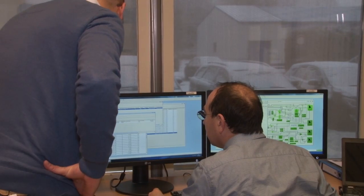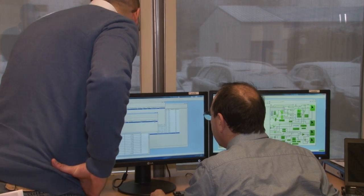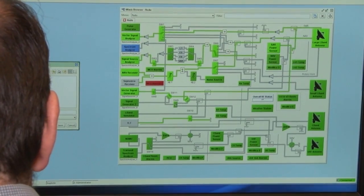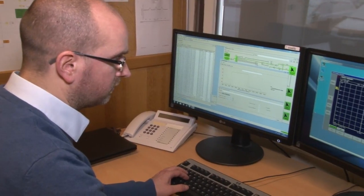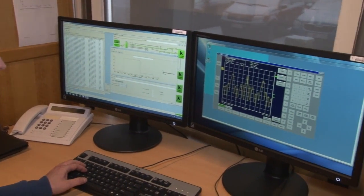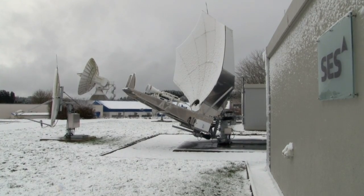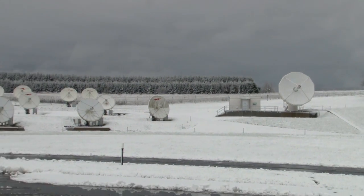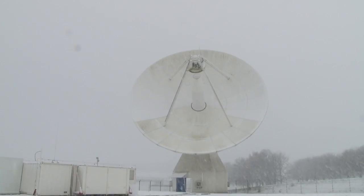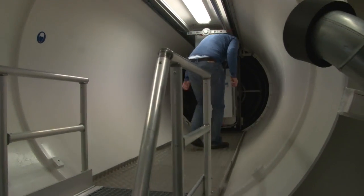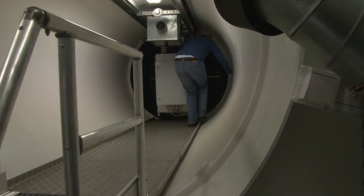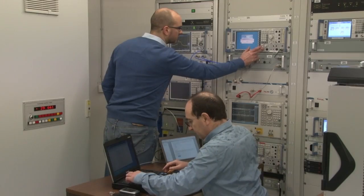REDU Space Services' role in the Galileo project is to do the in-orbit testing. That consists mainly in checking that the satellite has not suffered from high temperature and vibration conditions during the launch. This is done thanks to a dedicated ground infrastructure located here in REDU. During a validation campaign, the most critical aspect is to check that the measurements taken from the satellite in orbit match the measurements taken previously on ground.